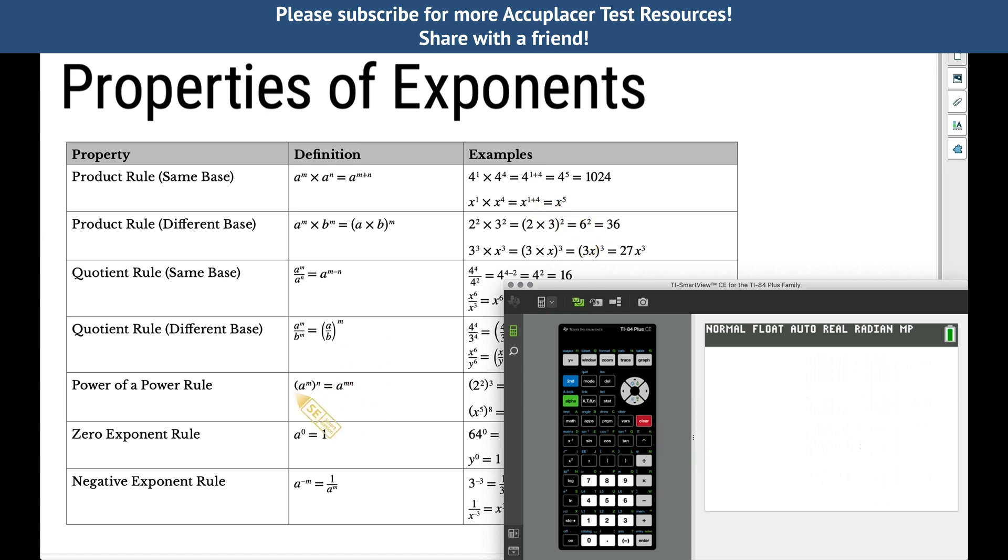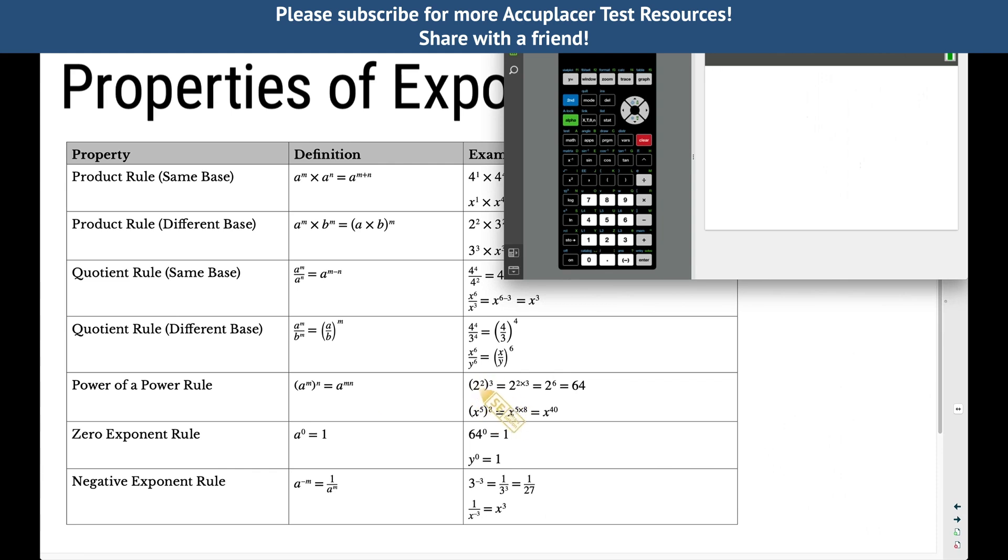Let's look at another rule. How about this power of a power rule? If we have a to the m and all of that stuff is raised to the n, we can multiply these two exponents together. Check this out. We have two squared and then we're cubing all that. This means we can take the two times the three, these two exponents, and we should have two to the sixth. This works for any base raised to a power and then that is raised to a power as well.